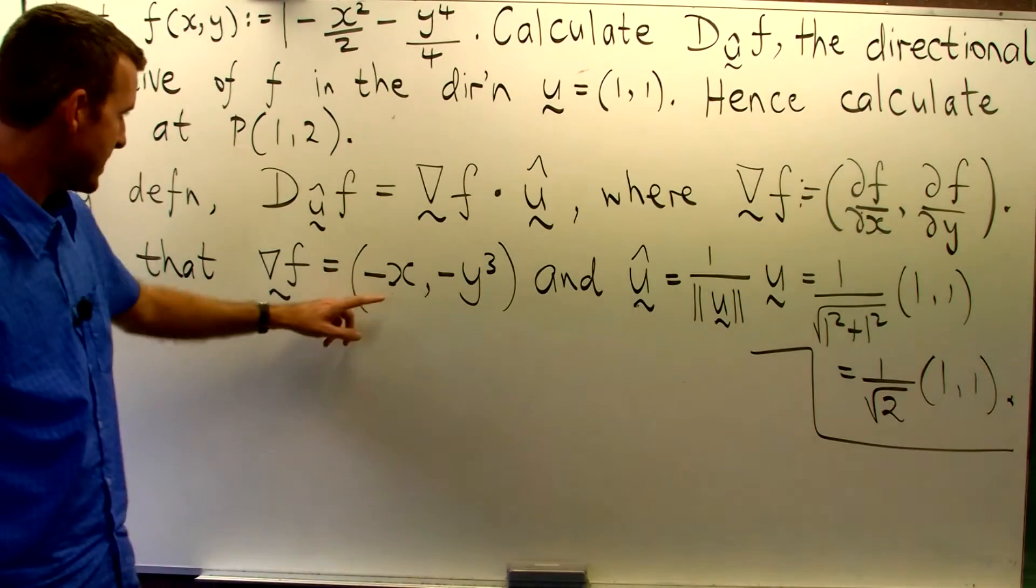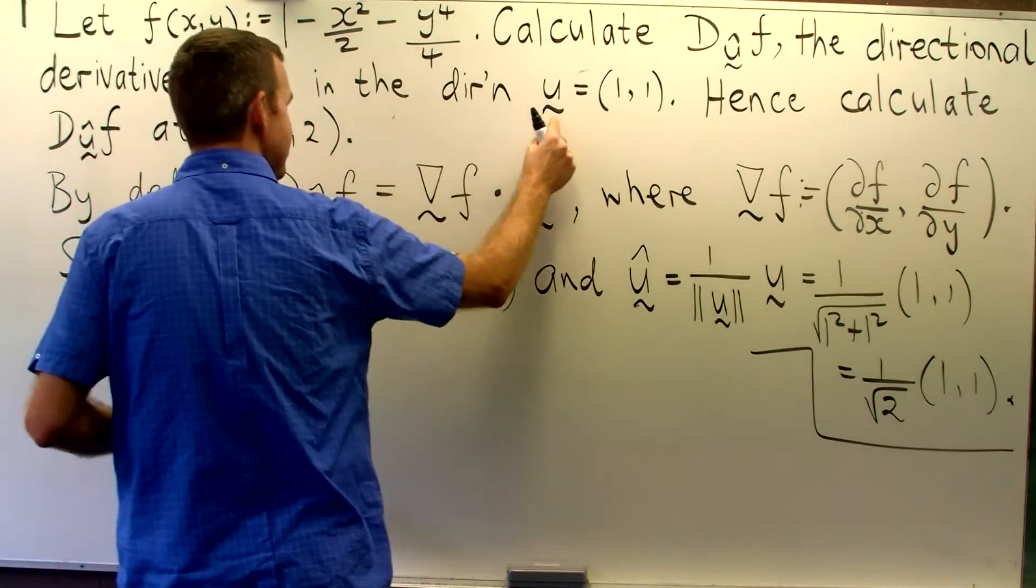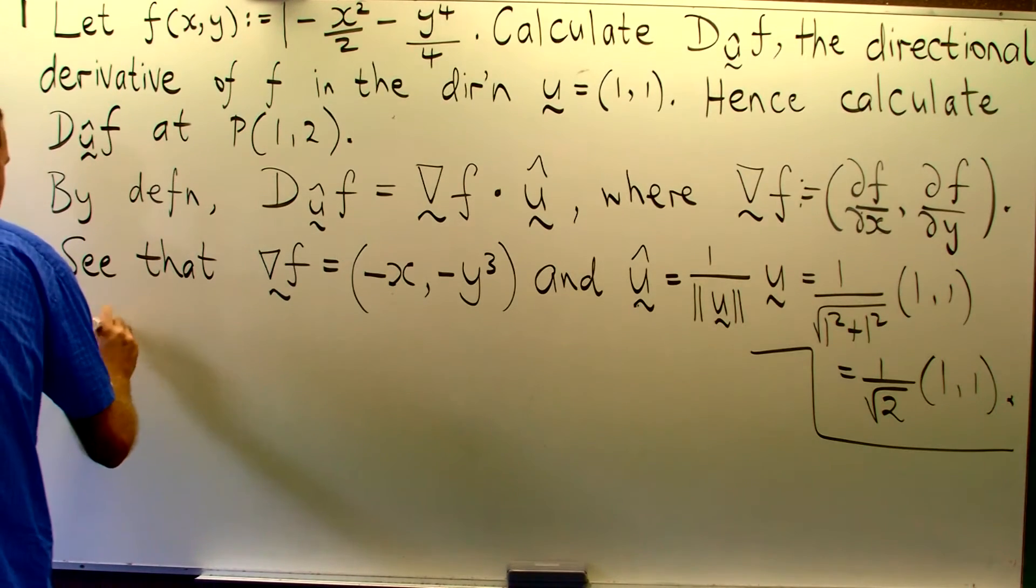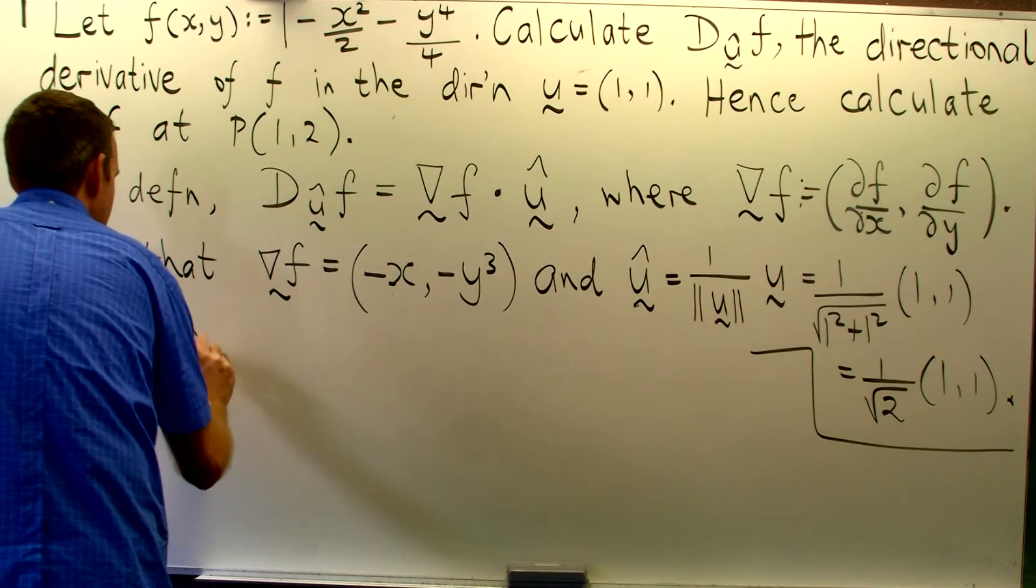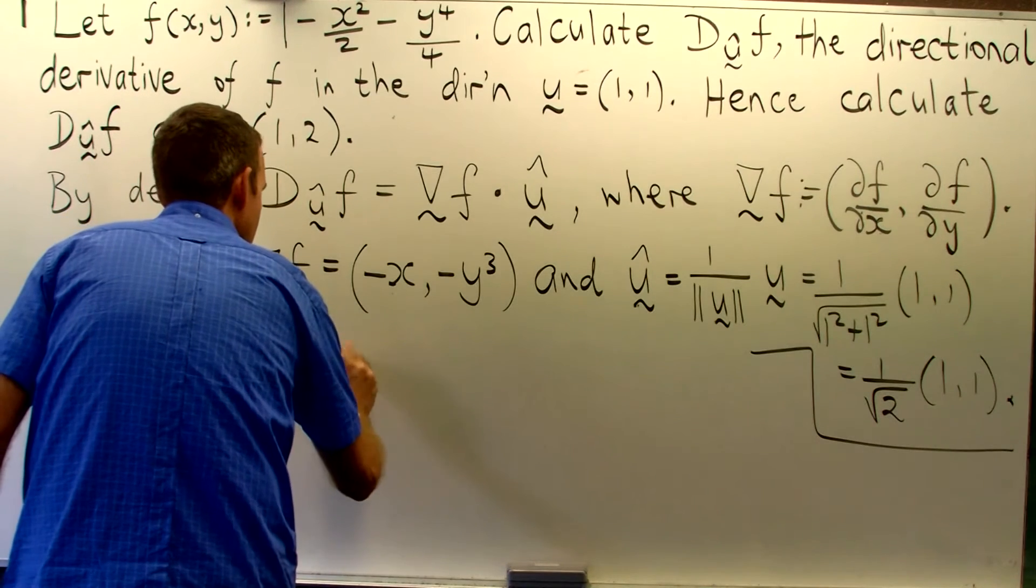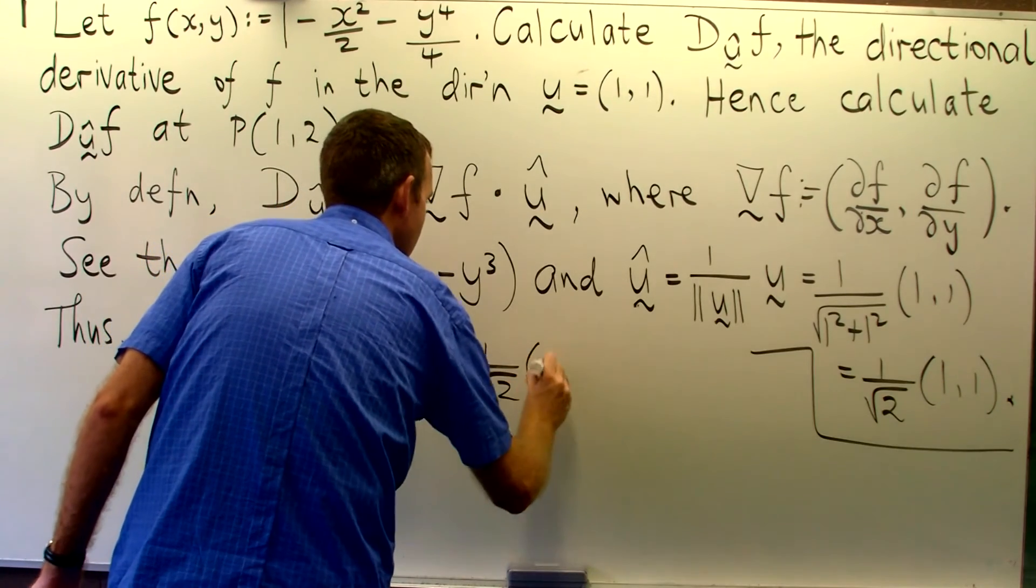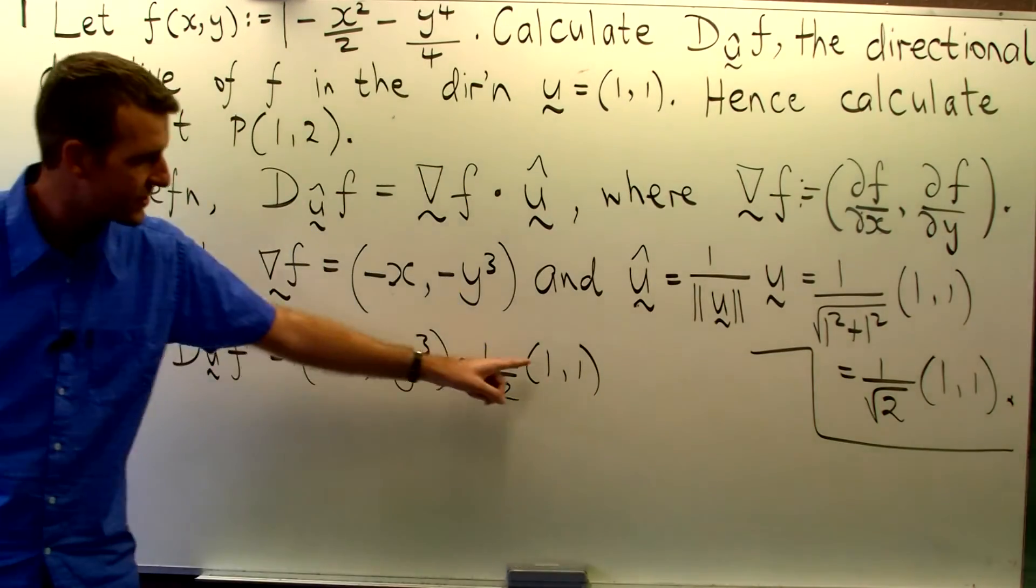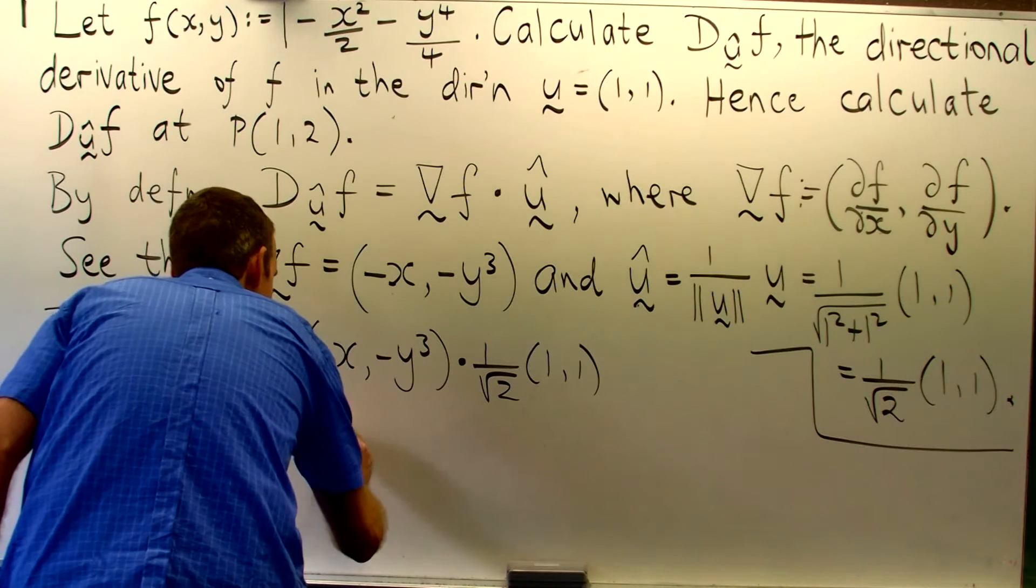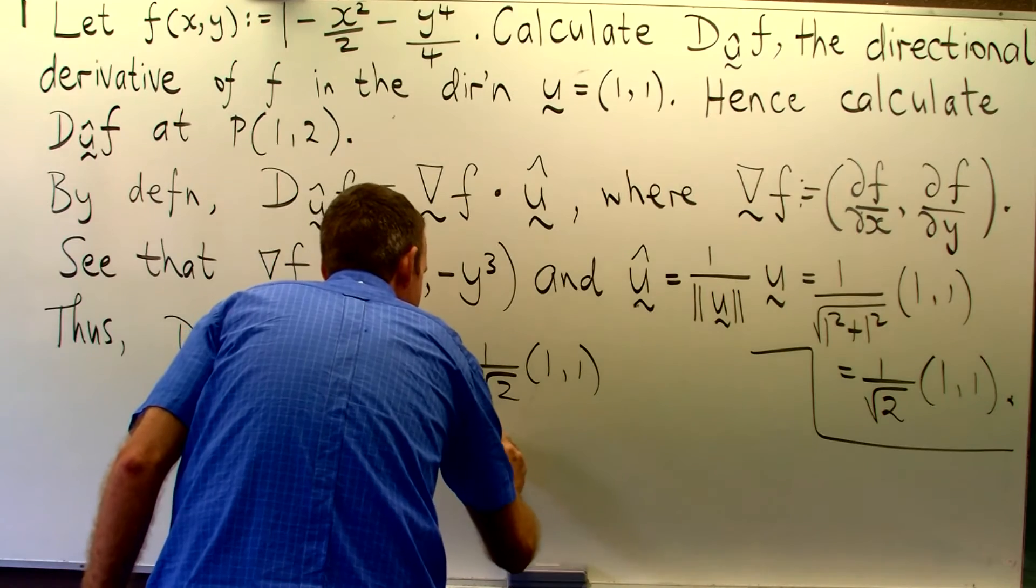Alright, so let's just take the dot product of this and this and we'll have our directional derivative of f in the direction of this vector here at any point x comma y. Okay, so it is the following dot product. Okay, so just multiply the corresponding components together and add everything. So we get something like this.